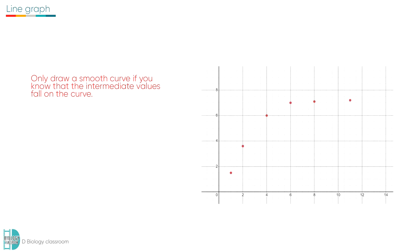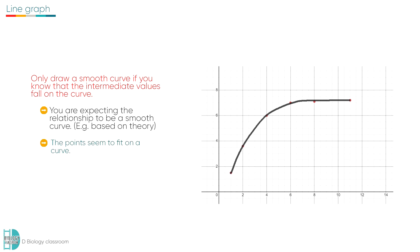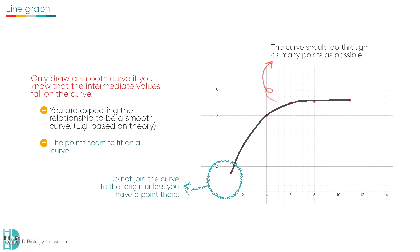You should only draw a smooth curve if you know that intermediate values fall on the curve — only when you are expecting the relationship to be a smooth curve and the points seem to fit. However, this is usually not a common case in the examination. Unless you have a point at the origin, always start at the first plotted point. The curve should go through as many points as possible, with an even number of points on either side. Do not continue past the last plotted point.